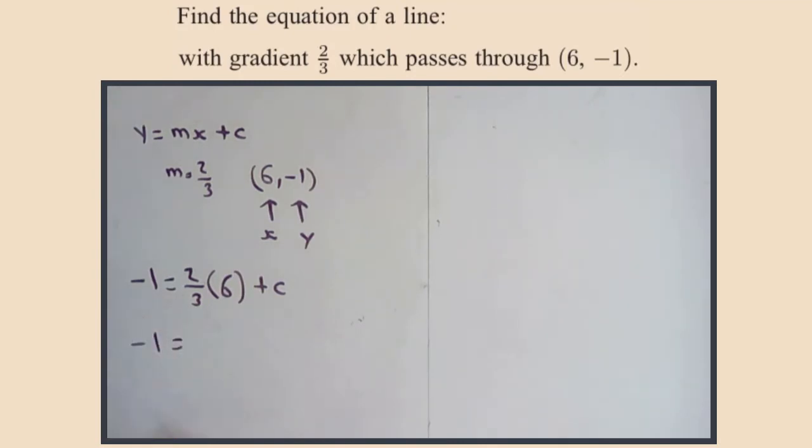Your second option would be minus three equals two times six plus three c. But I'm instead going to write minus one equals two-thirds times six. Now 'of' means times, and times means of—you're finding two-thirds of six. So one-third of six is two. Two-thirds of six must be four. So four plus c.